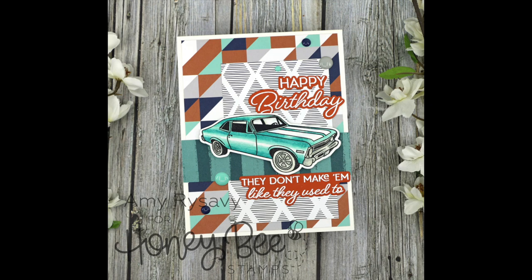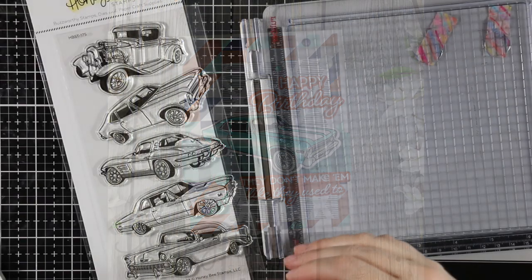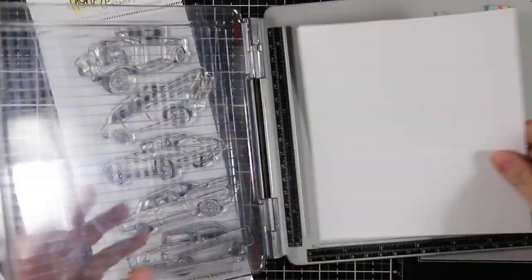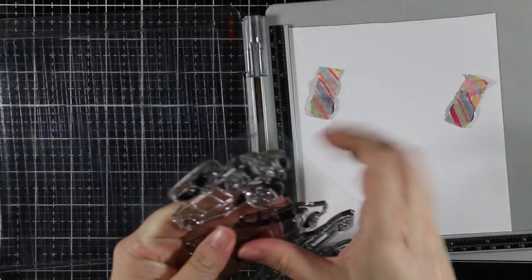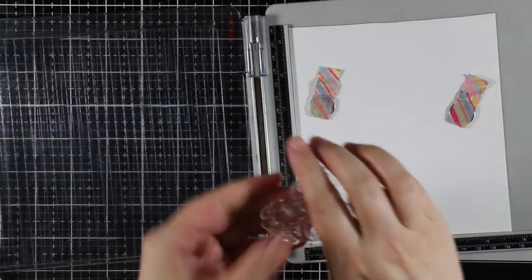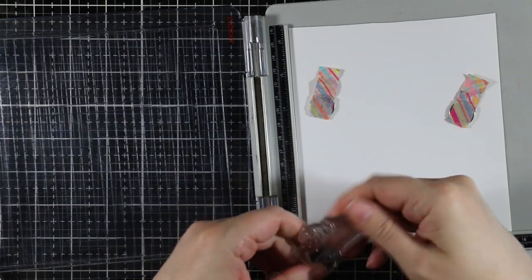Hello everyone, Amy R here with Prairie Paper and Ink with a masculine themed card using several of the newer Honeybee Stamps releases, starting off with the Car Show stamp set. I pulled my favorite car from the set.